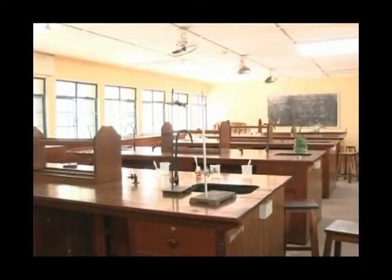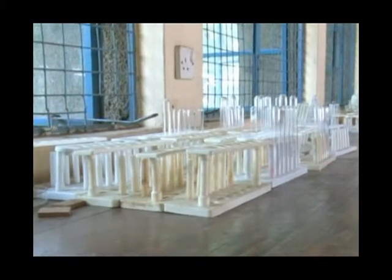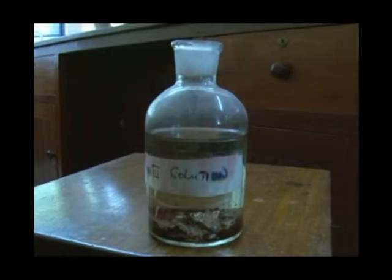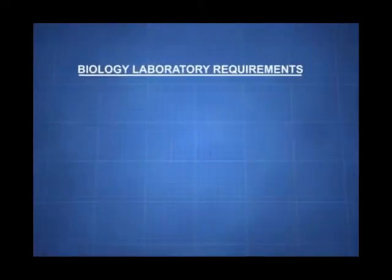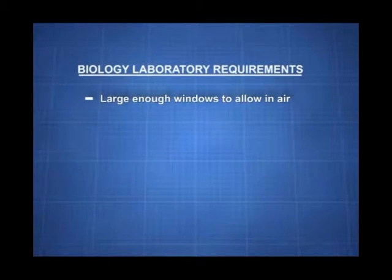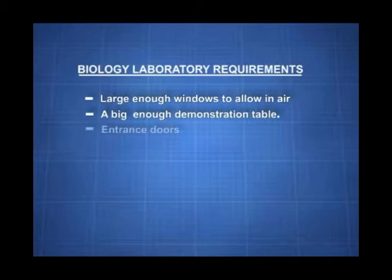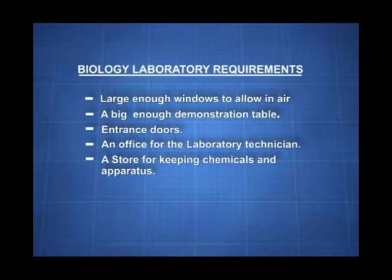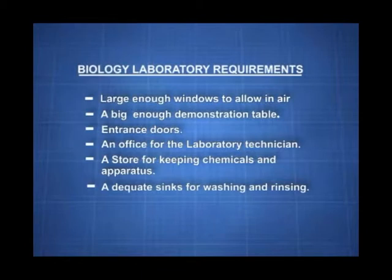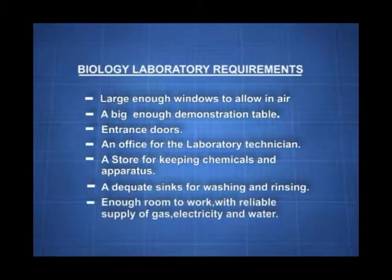Let's sum up what we have learned today about the requirements of laboratories, rules for correct conduct in a biology laboratory, and warnings on containers with chemicals and laboratory apparatus. A biology laboratory should have large enough windows to allow in air, a big demonstration table, entrance doors ensuring easy access and exit, an office for the laboratory technician, a store for safe keeping of chemicals and apparatus, adequate sinks for washing, and enough room to work with a reliable supply of gas, electricity, and water.